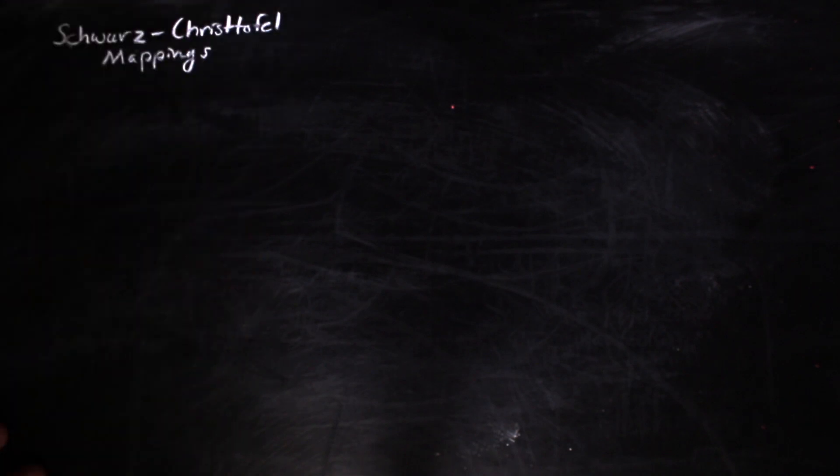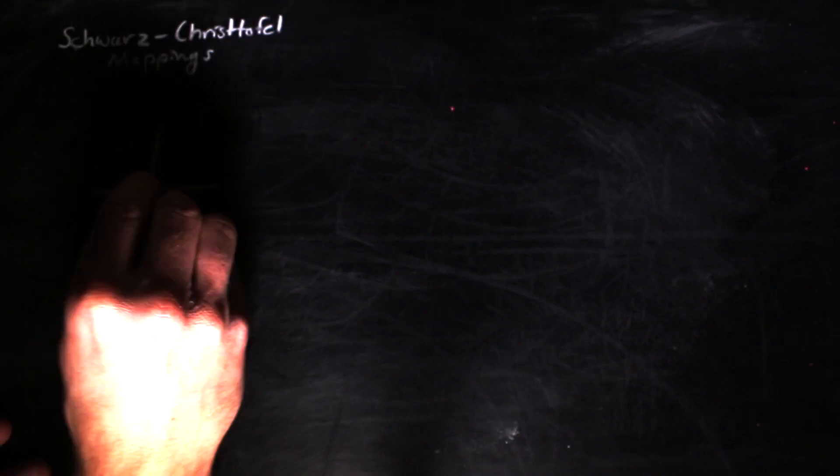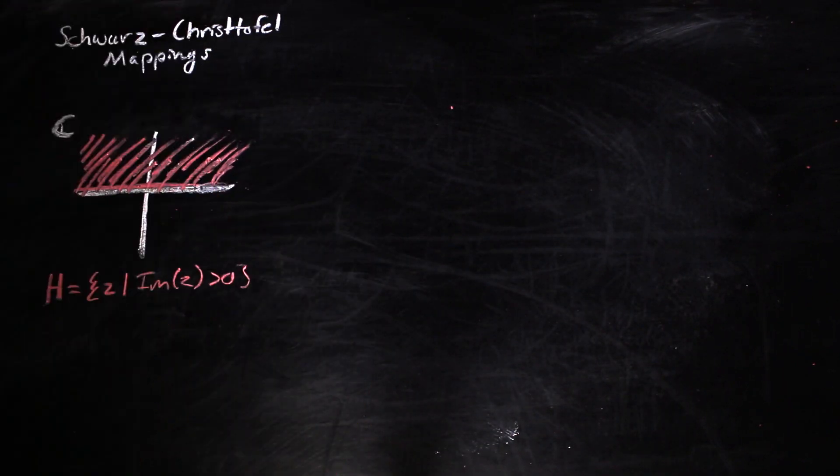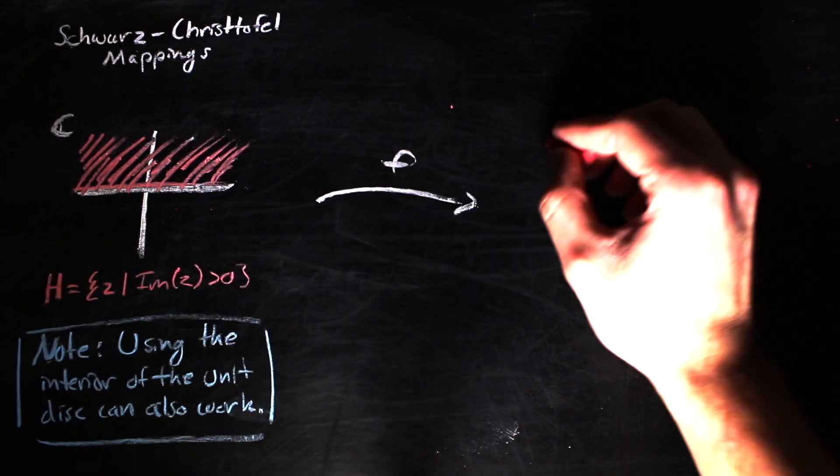A Schwarz-Christoffel mapping, okay that's a mouthful, but moving on, takes the upper half of the complex plane, or all of the complex numbers with non-negative imaginary parts, and maps them to polygons.